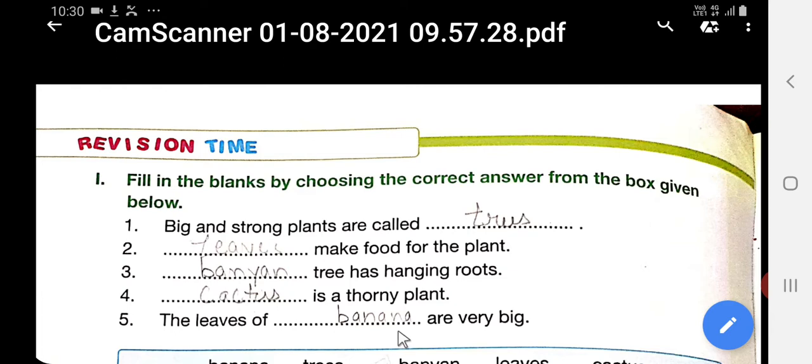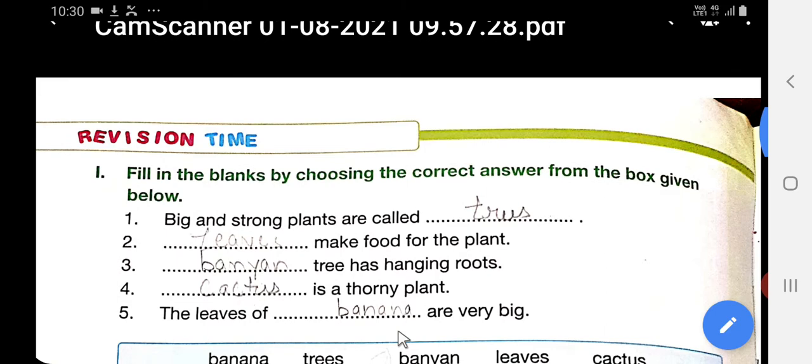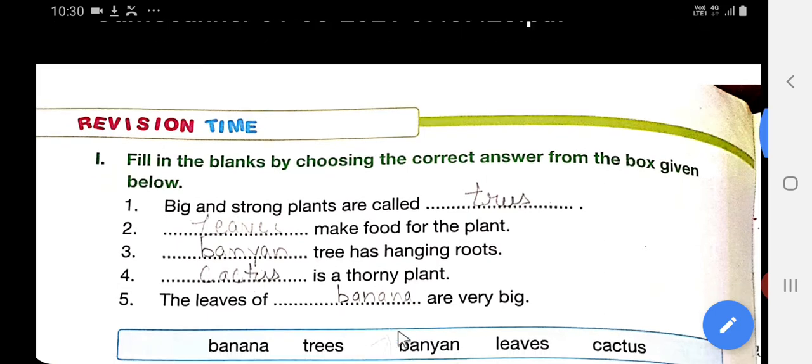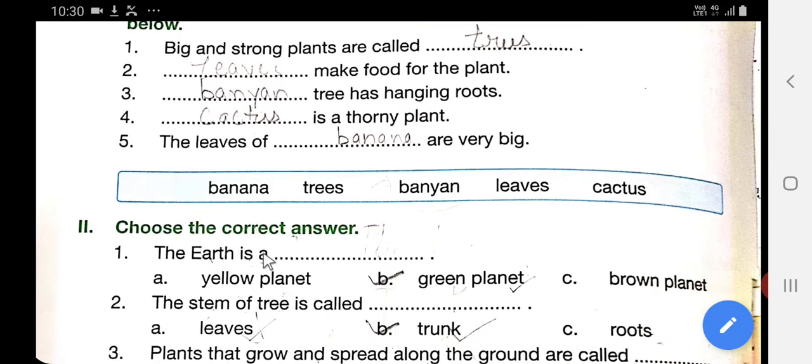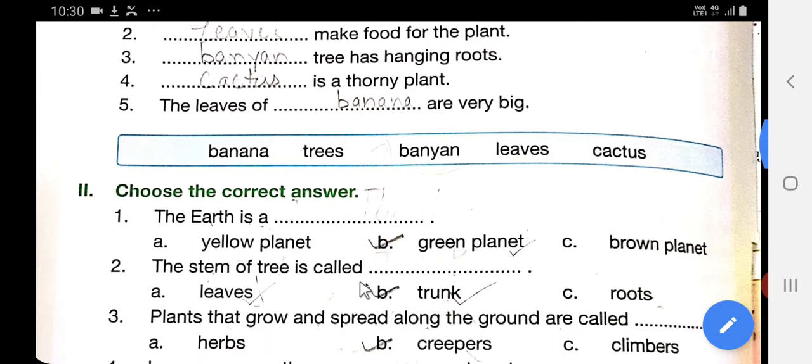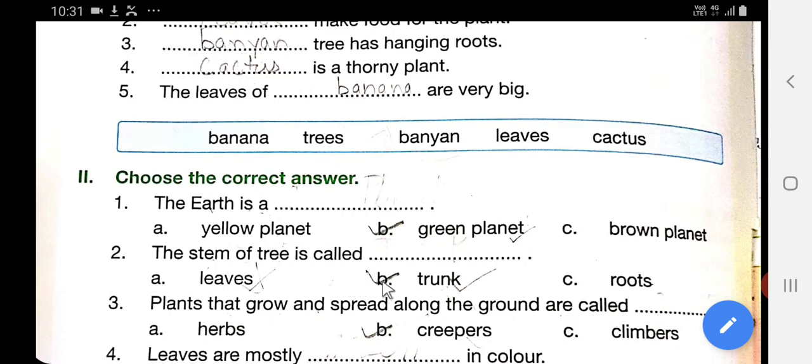The leaves of banyan are very big. Banyan tree ki jo leaves hai, wo bahut badi hai. Second is choose the correct answer. The earth is a green planet. Earth kya hai? Ek green planet hai. The stem of trees is called trunk. Jo stem hoti hai trees ki, usko kya bola jata hai? Trunk bola jata hai.